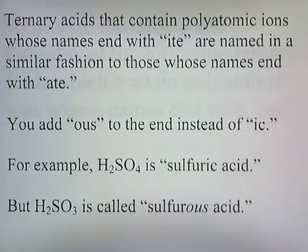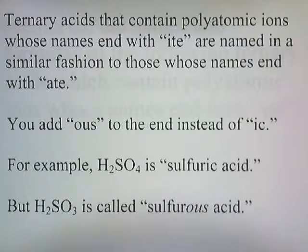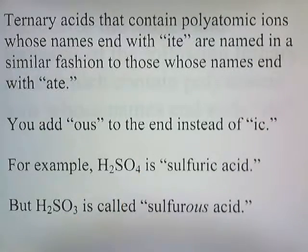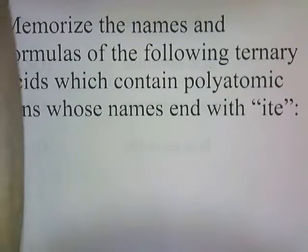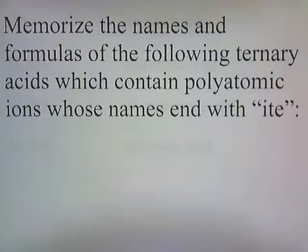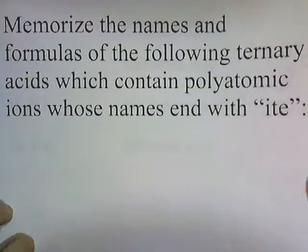Ternary acids that contain polyatomic ions whose names end with '-ite' are named similarly to those ending in '-ate', but you add the suffix '-ous' instead of '-ic'. For example, H2SO4 is sulfuric acid, but H2SO3 is called sulfurous acid — one less oxygen from 4 to 3, and the suffix changes from '-ic' to '-ous'. These names are not hard to memorize if you know the '-ic' acids — just subtract one oxygen and it ends in '-ous'.